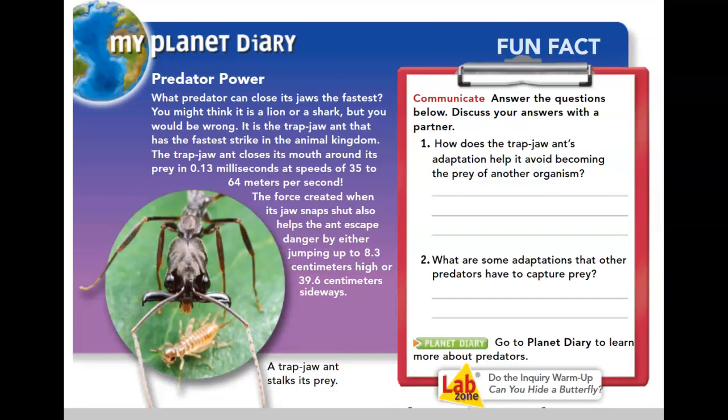My Planet Diary: Predator Power. One predator can close its jaw the fastest. You might think it's a lion or a shark, but you'd be wrong. It's the trap-jaw ant, which has the fastest strike in the animal kingdom. It closes its mouth around prey in 0.13 milliseconds at a speed of 35 to 64 meters per second. The force from its jaw snapping shut also helps the ant escape danger by jumping up to 8.3 centimeters high or 39.6 centimeters sideways.